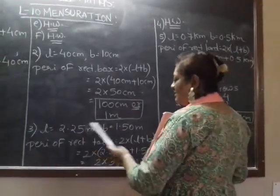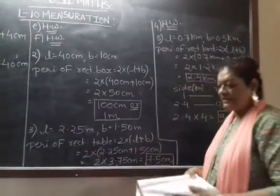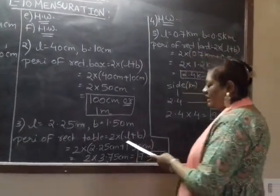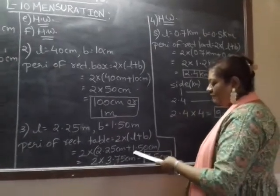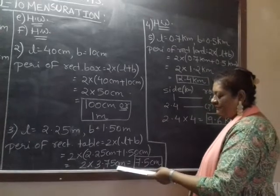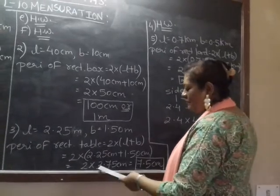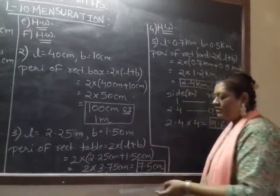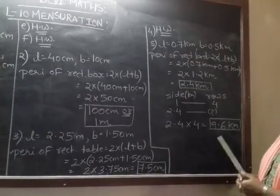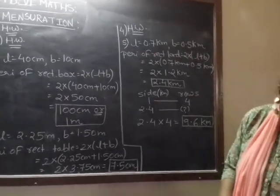What is the perimeter of table top? Table, L and B is given. So definitely the shape is of rectangle. So the formula 2 into L plus B, 2.25 plus 1.50. When you add together, it will be 3.75. Brackets are removed. Then after you have to multiply 2 with 3.75. Your answer is 7.5 meter. Fourth is your homework. Coming on to fifth.